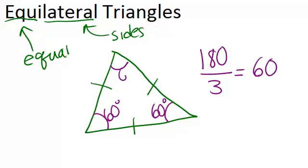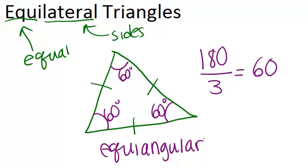So equilateral triangles are also known as being equiangular, because all of their angles are the same, and they always will be 60 degrees for any equilateral triangle, no matter how small or how big.